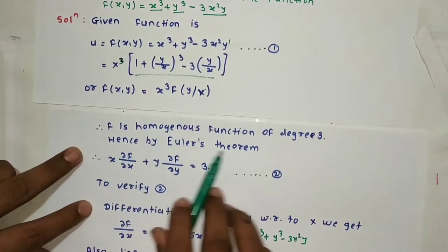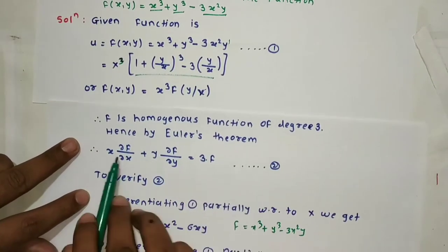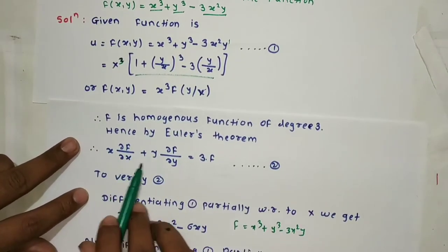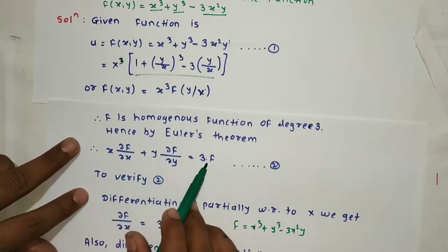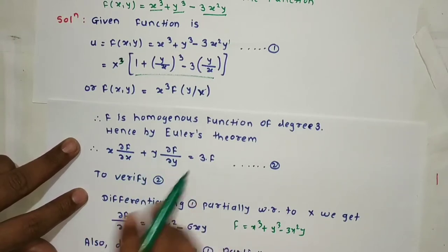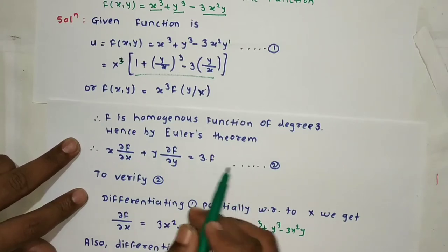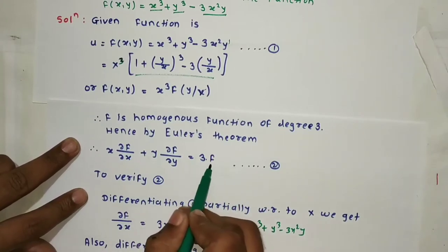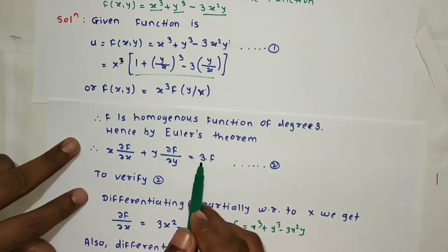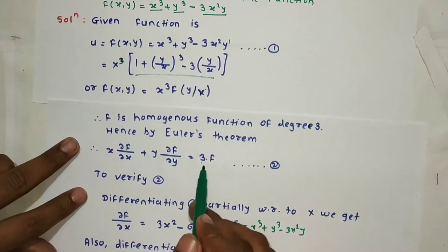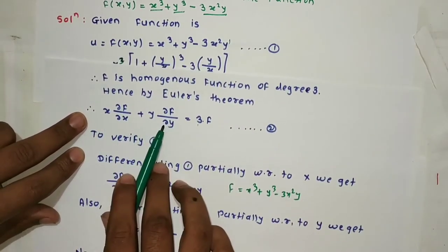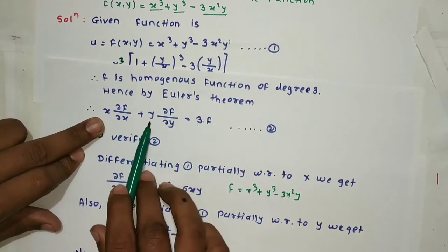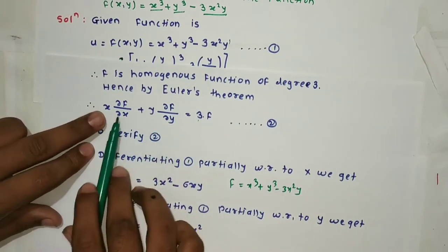Since it is a homogeneous function, by Euler's theorem: x · ∂f/∂x + y · ∂f/∂y = n · f. The value of n given here is 3, so the RHS is 3f. We need to verify Euler's theorem, i.e., we need to show that the LHS equals 3f.